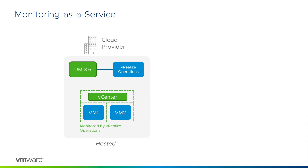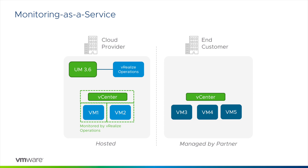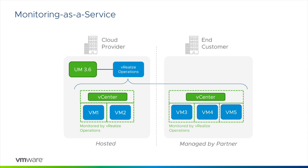The second business model is using vRealize Operations as part of your managed services offering. In this case, the customer owns the vSphere licensing and hardware located in their environment, or the customer is part of a bring-your-own-license environment and you are managing the environment for them. This means that you are not metering the vSphere usage as part of the VMware Cloud Provider program. In this scenario, you have vRealize Operations running in your cloud hosting environment monitoring your production workloads, and you would extend vRealize Operations to also monitor the workload running in the customer's environment as well.